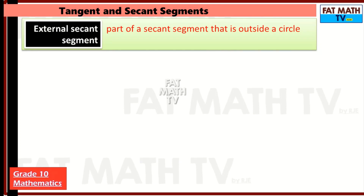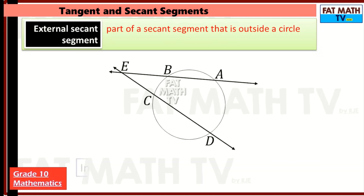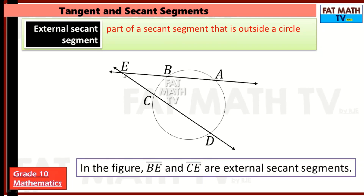Now, the external secant segment is the part of a secant segment that is outside a circle. For example, if we have a secant segment EA, then the external secant segment is EB. For another secant, the external secant segment is EC. So BE and CE are the external secant segments — the parts outside the circle.